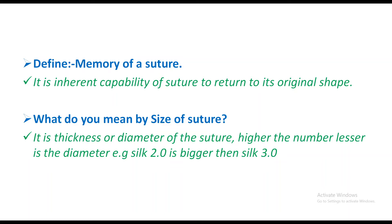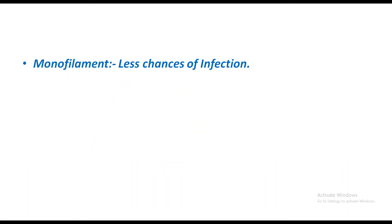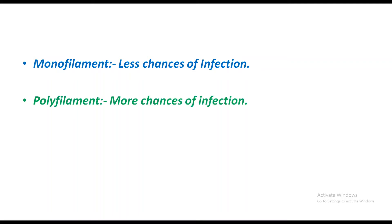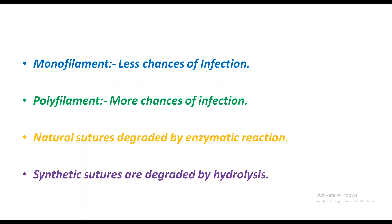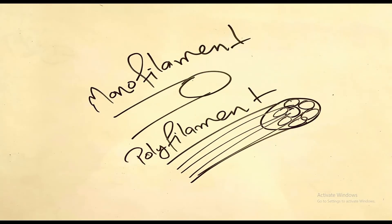For example, silk 2.0 is bigger than silk 3.0. Monofilament sutures have less chance of infection, while polyfilament sutures have more chances of infection. Natural sutures are degraded by enzymatic reaction — this is an MCQ point — while synthetic sutures are degraded by hydrolysis. In the diagram, monofilament has one filament while polyfilament has many monofilaments embedded in a sheath.